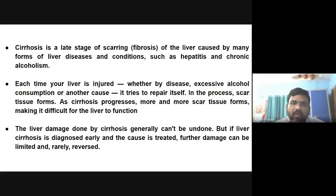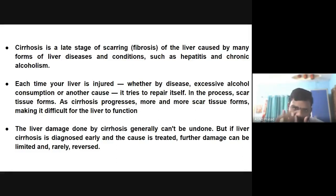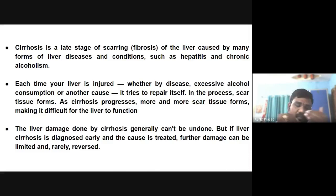Liver cirrhosis is the last stage of scarring and fibrosis of the liver, caused by many forms of liver diseases and conditions — such as hepatitis and chronic alcoholism. Each time your liver is injured, whether by disease, excess alcohol consumption, or another cause, it tries to repair itself. In this process, scar tissue forms. As cirrhosis progresses, more and more scar tissue forms, making it difficult for the liver to function. The damage done by cirrhosis generally cannot be undone. If diagnosed at a very early stage, it may be treated to prevent further damage.